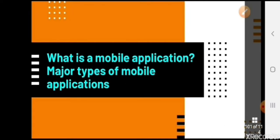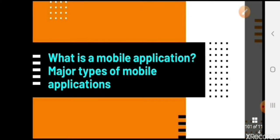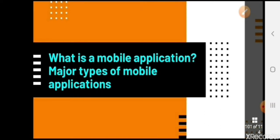Today's topic is mobile applications and their types. When you buy a mobile phone, you can see some apps pre-installed on it. There are also apps you can download from the Play Store, some that require internet access, and some that you can use without internet access. We will see all of this differentiation in this video.